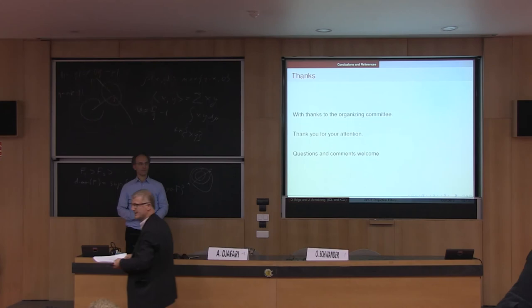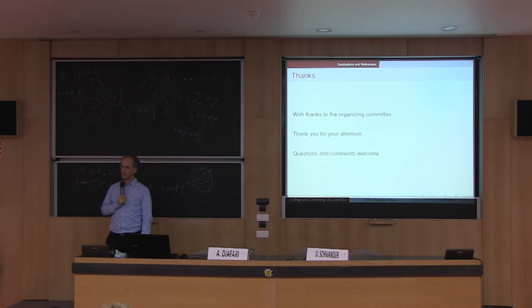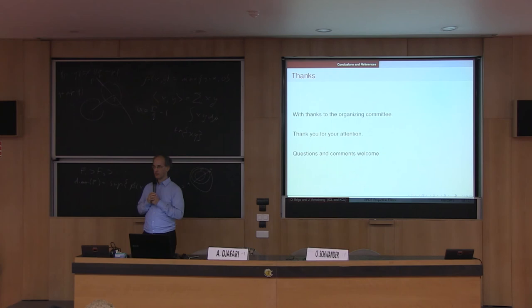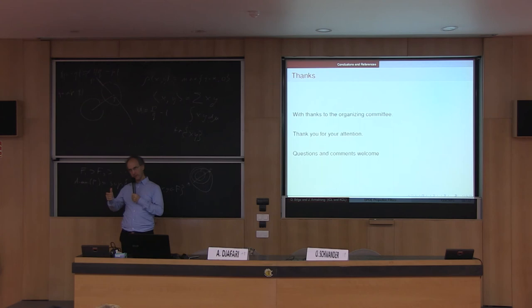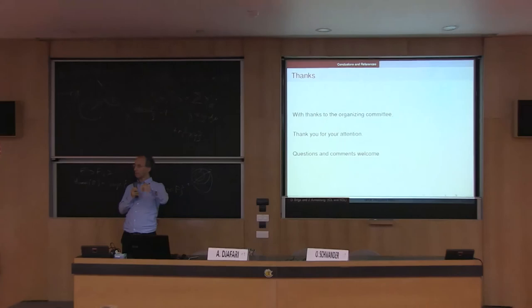During Q&A, a question arose about whether the property of making the correction step exact is linked to conjugate priors. The answer is that it could be related: in discrete time, the correction step is simply the Bayes formula, and if you take the family that includes the observation function in the exponent, you just need to update the parameter to compute the integral — so yes, it could be related to conjugate priors.